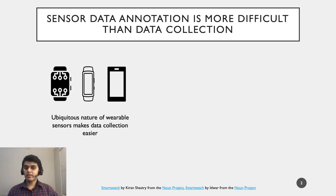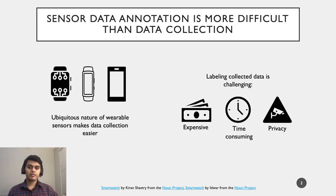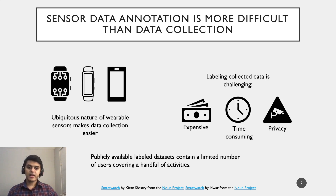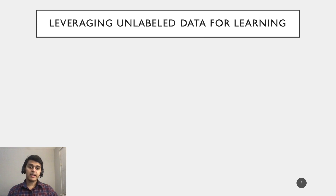This process, however, is challenging as it is expensive, time-consuming, and poses privacy concerns. Due to factors such as these, publicly available labeled datasets tend to be limited in size and cover only a few activities. This disparity between the ease of data collection and the laborious nature of data annotation presents us with an opportunity: can we leverage large-scale unlabeled data to train models that can help improve performance on smaller-scale labeled datasets?